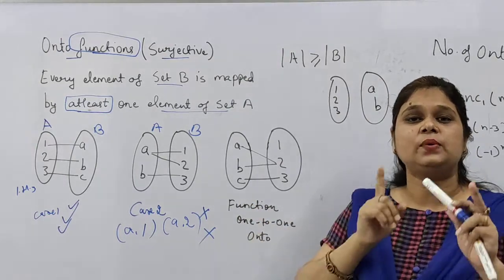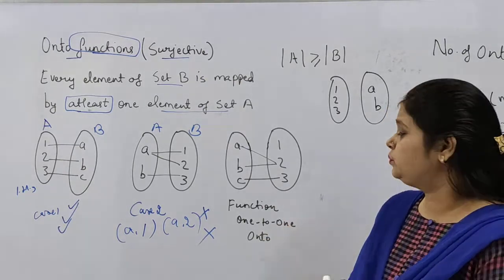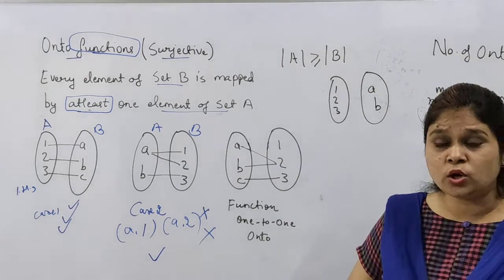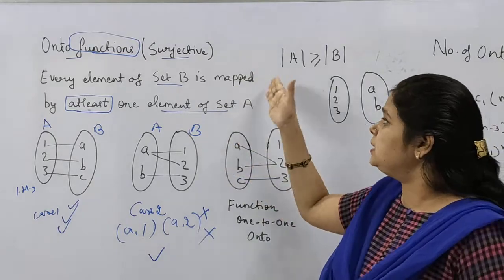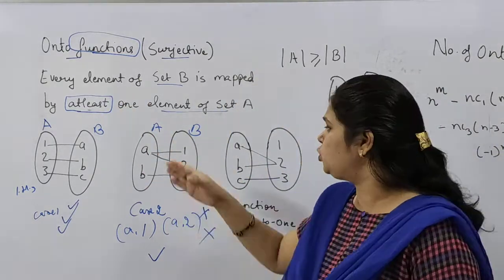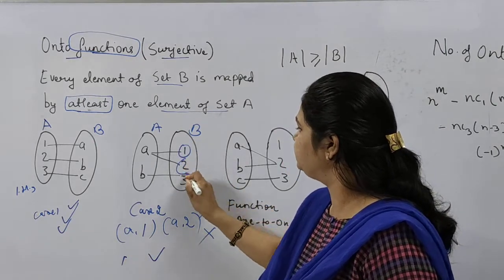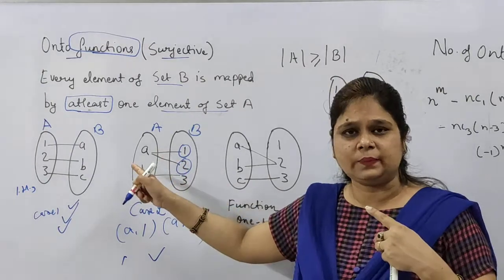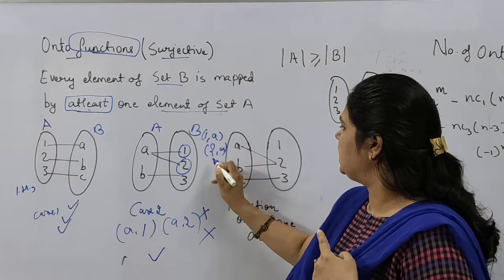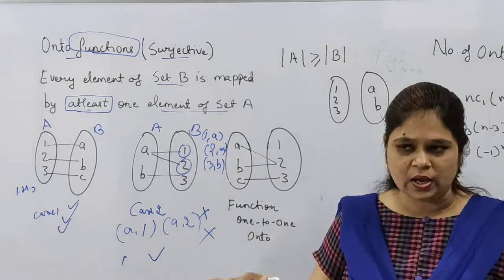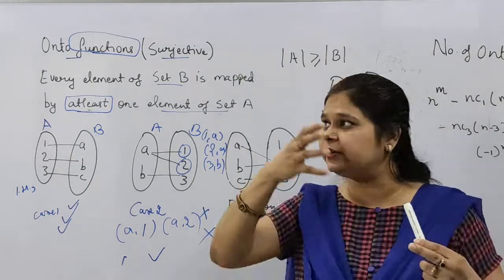Hence, for being onto or one to one, you must have one to one mapping, unique mapping. Is this onto? This is onto. Why onto? Because onto says that set B, set B's every element must be mapped at least. So, you see one or two. This one or two, both have mapping with A. Means one with A, and two with A. And three with B. So there is no violation. Hence, this is onto.